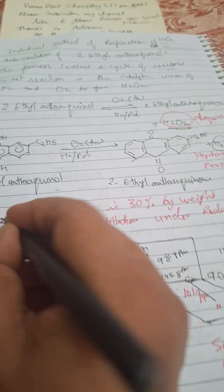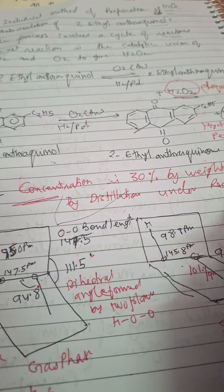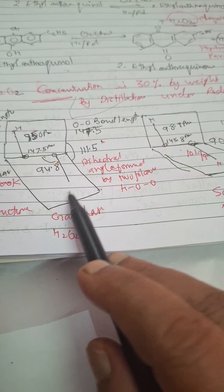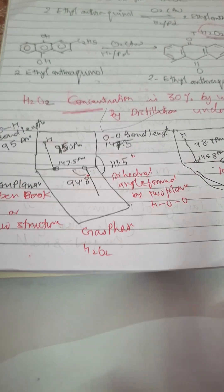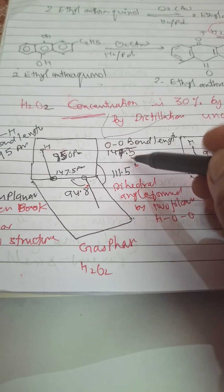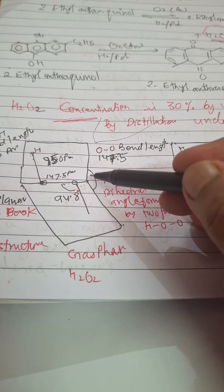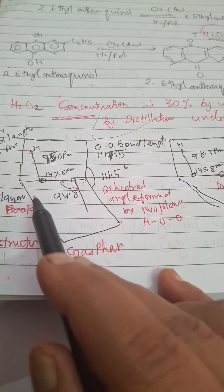30% by weight of H2O2 concentration we'll get after distillation under reduced pressure. Now we will go for the structure of H2O2, very very important. First I will discuss the dihedral angle between two planes.